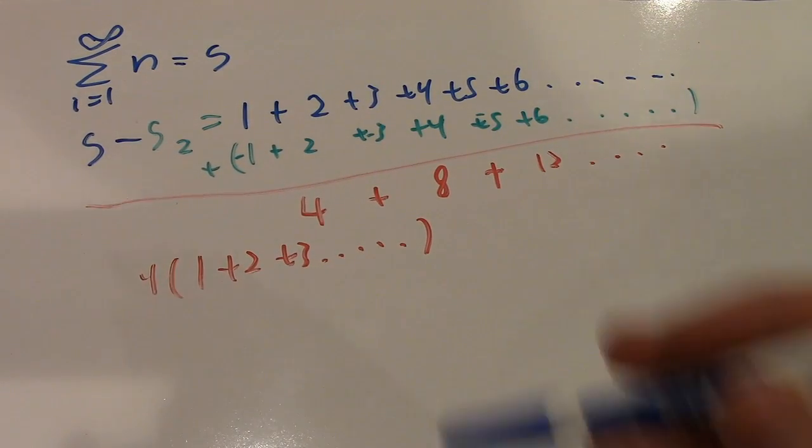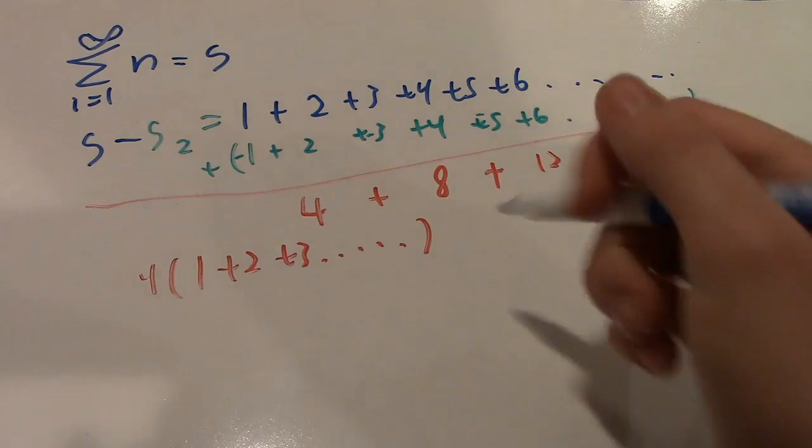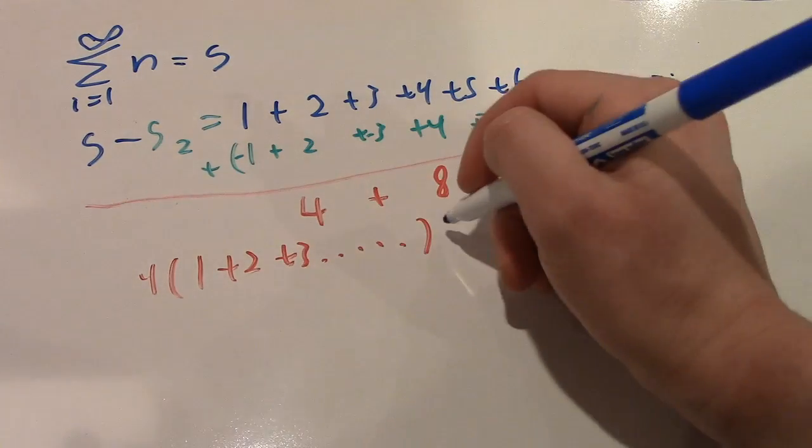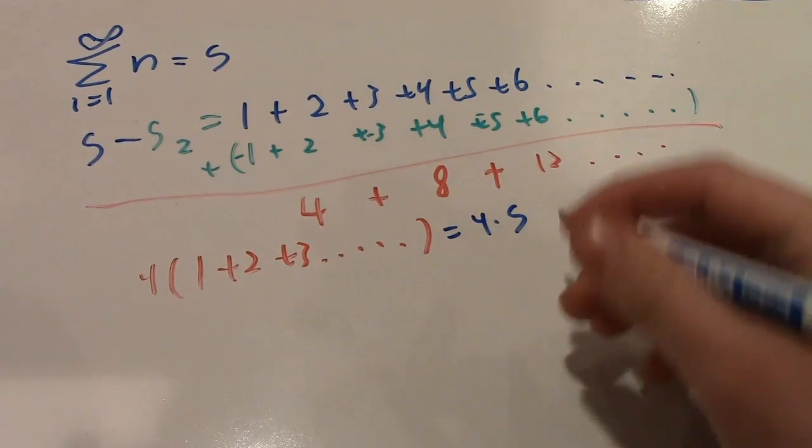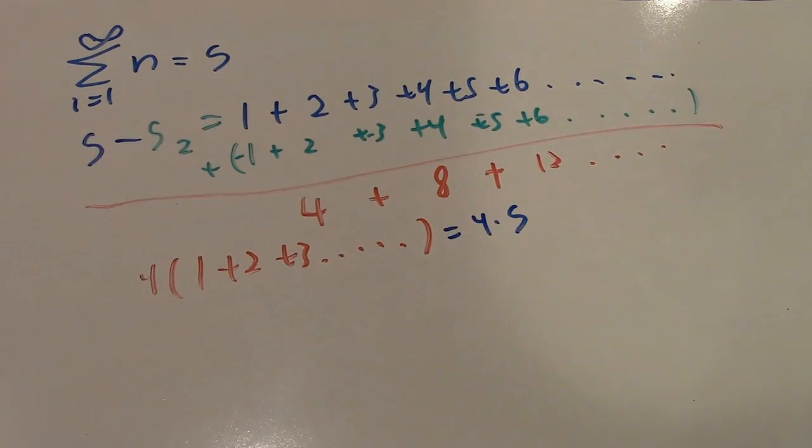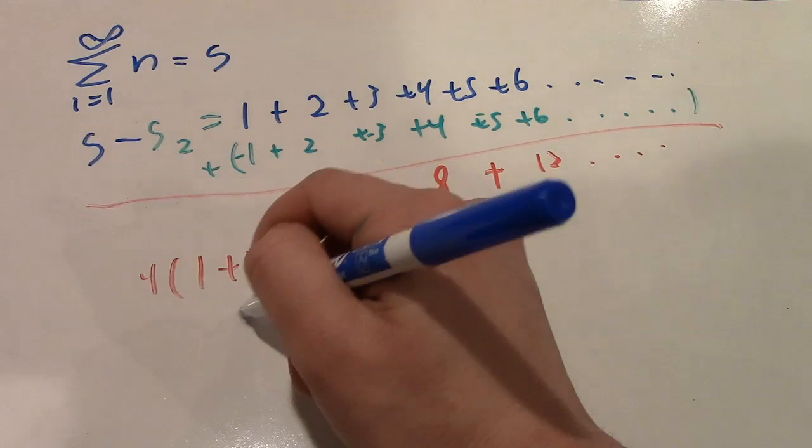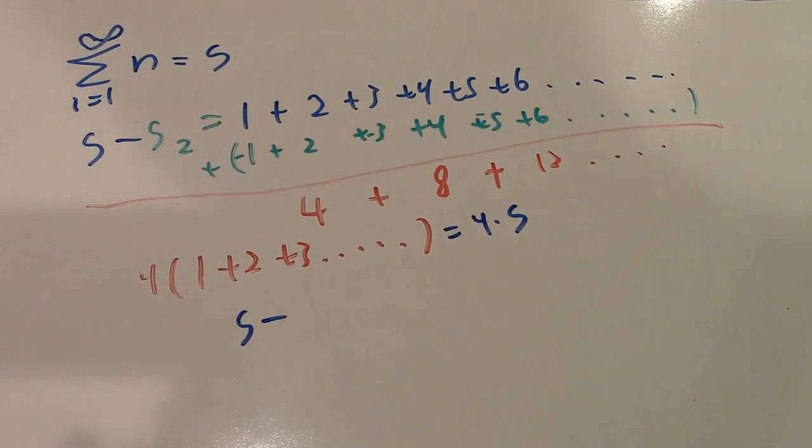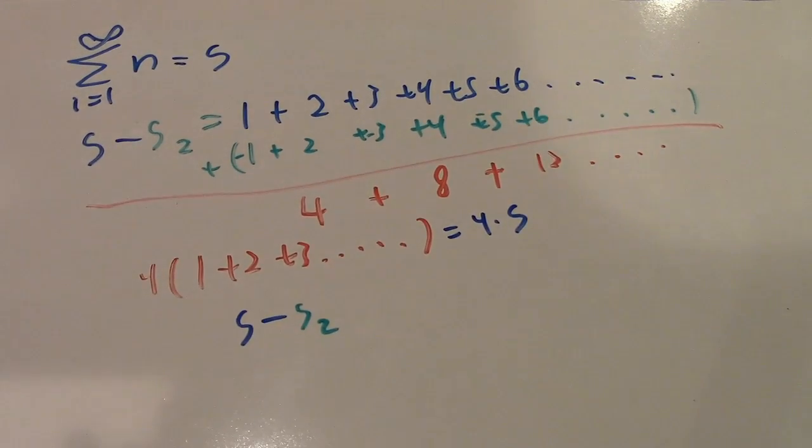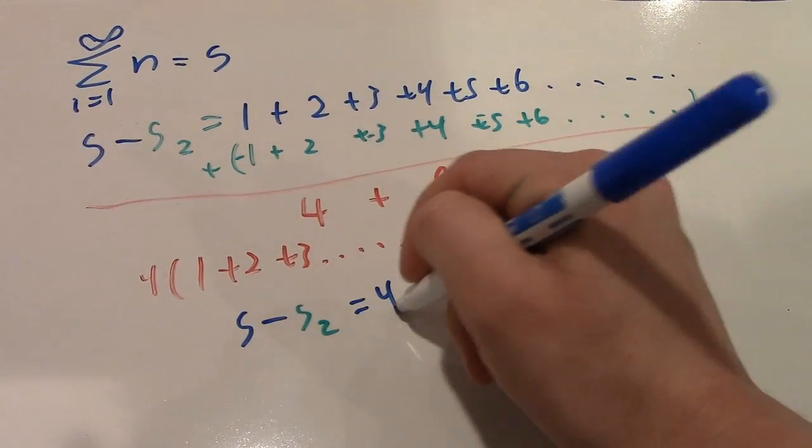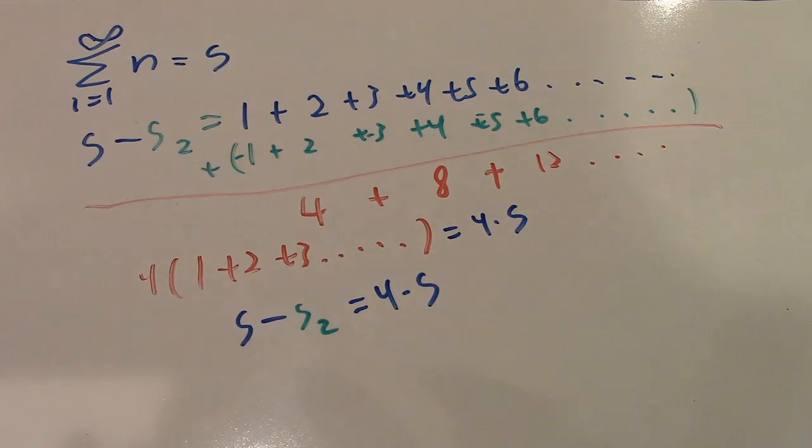Now, what I'm going to do is I'm actually going to take a 4 out of all of these numbers. So, that will leave us with 1 plus 2 plus 3, and so on. Now, you may notice that this looks a little familiar. In fact, this is our main sum. So, this means that it is equal to 4 times our main sum. So, this means that S, our main sum, minus our second sum, is equal to 4 times our main sum.